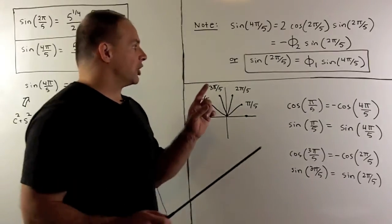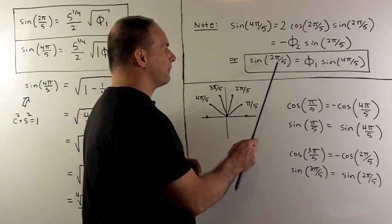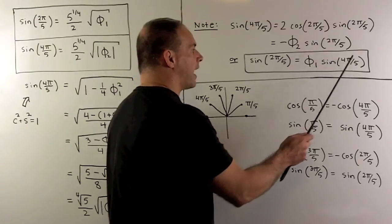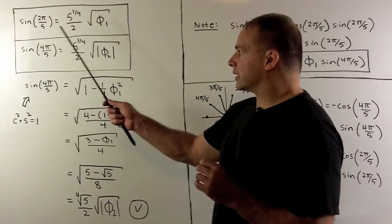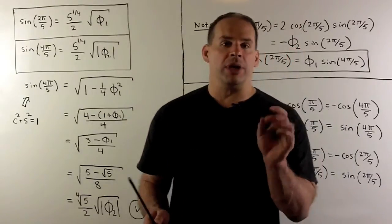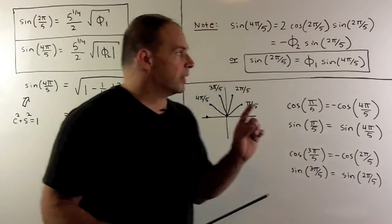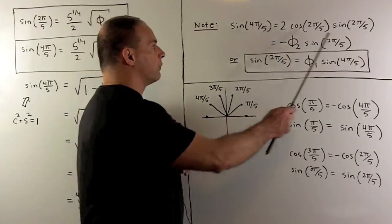Now, we'll also have the relation sine of 2π/5 equals φ₁ sine of 4π/5. We could check that directly. And we could do it checking with a calculator.